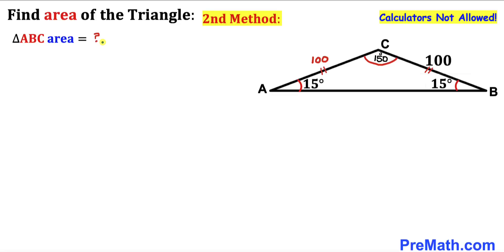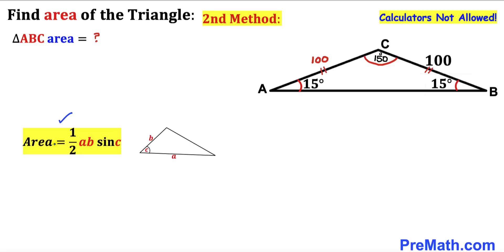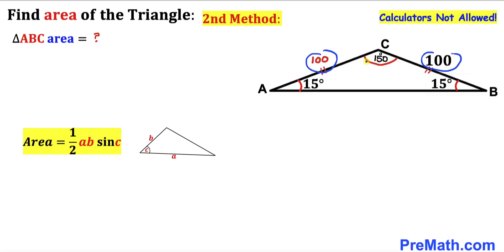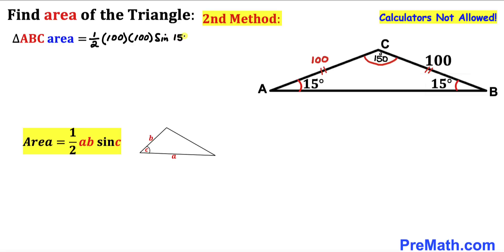For the final step of method two, let's calculate the area of triangle ABC using the formula: Area = ½ × A × B × sin(C), where A and B are two side lengths and C is the angle between them. In our case, the two side lengths are both 100 and the included angle is 150 degrees. So the area equals ½ × 100 × 100 × sin(150°).